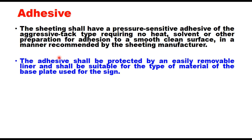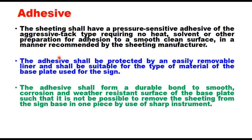Regarding adhesive force: the sheeting shall have a pressure sensitive adhesive of the aggressive tack type requiring no heat, solvent or other preparation for adhesion to a smooth, clean surface in a manner recommended by the sheeting manufacturer. The adhesive shall be protected by an easily removable liner and shall be suitable for the type of material of the base plate. The adhesive shall form a durable bond such that it is not possible to remove the sheeting from the sign base in one piece by use of a sharp instrument.